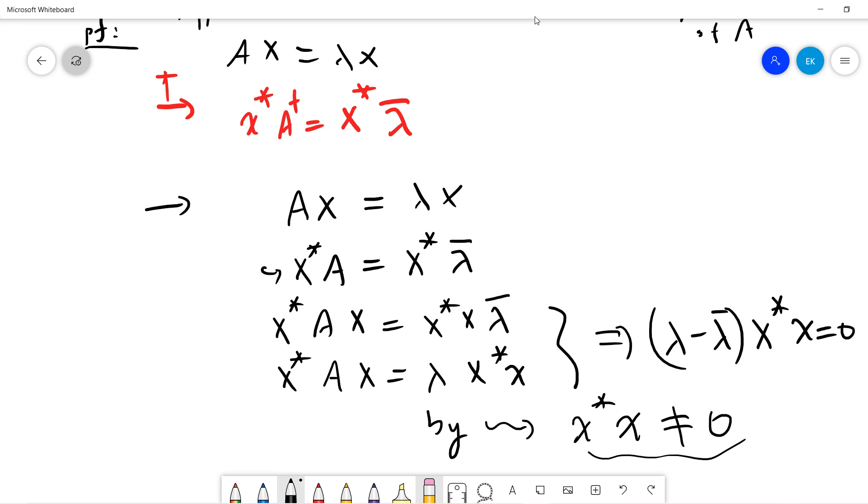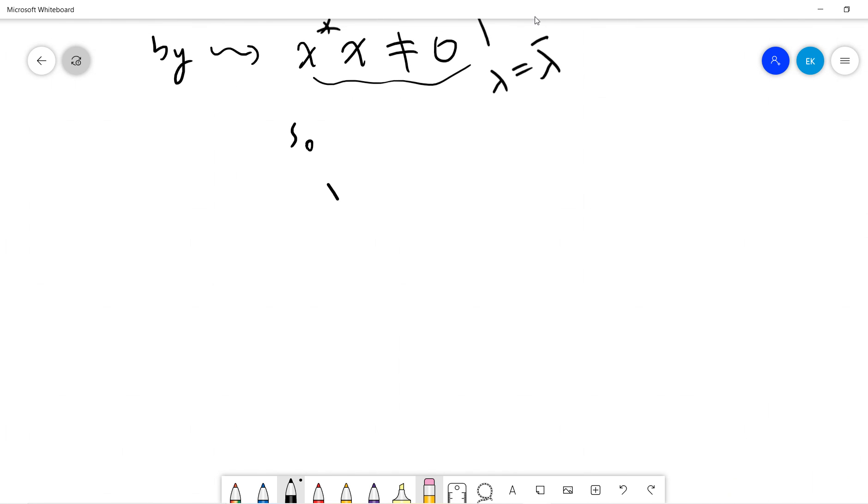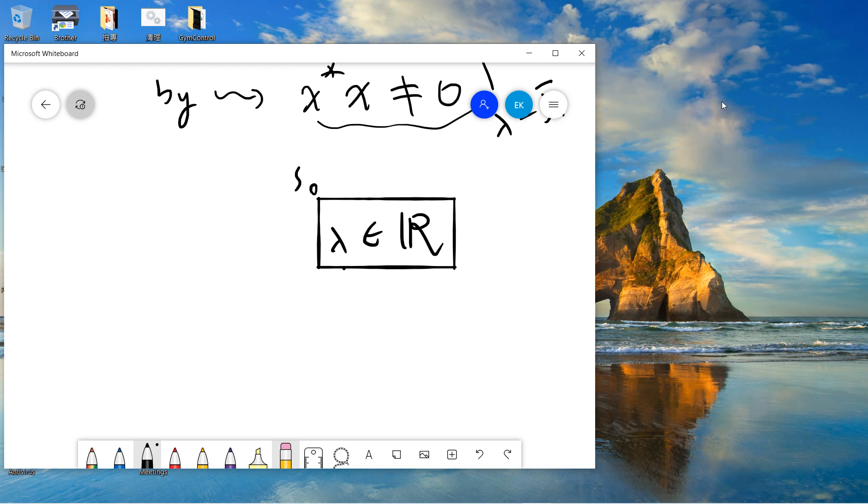So now you have lambda equals to lambda bar, so lambda is real. That's it. Be sure to subscribe to my channel, thanks.